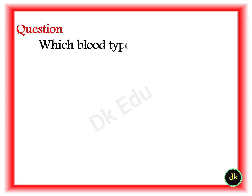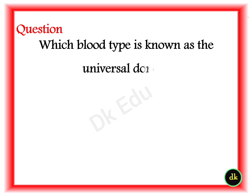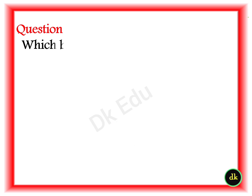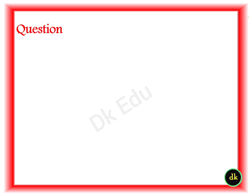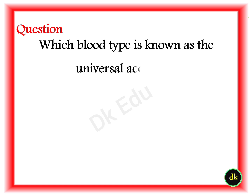Q: Which blood type is known as the universal donor? A: Group O. Q: Which blood group attracts mosquitoes? A: Group O. Q: Which blood type is known as the universal acceptor? A: AB positive.